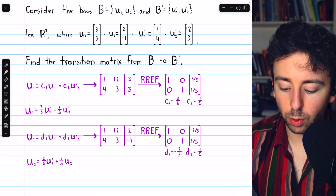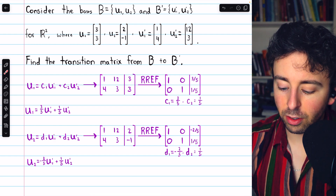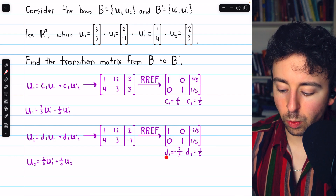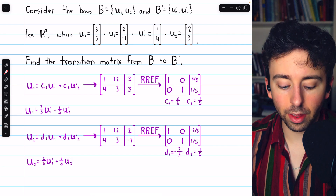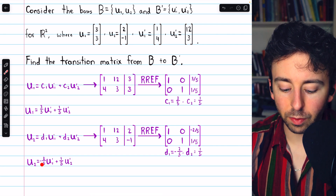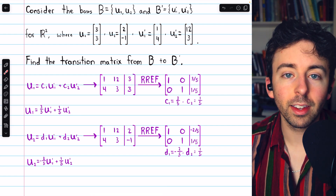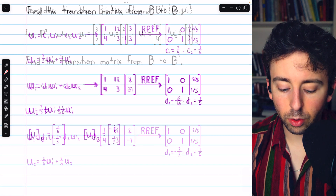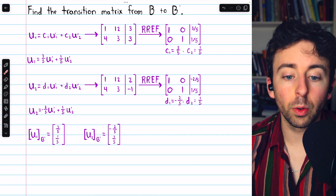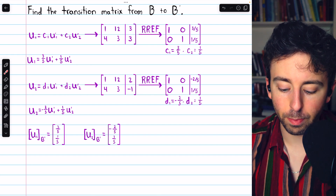We do the same thing for U2. Performing Gauss-Jordan elimination on this augmented matrix gets us to this reduced row echelon form. So D1 is negative two-fifths and D2 is positive one-fifth. So U2 equals negative two-fifths U1' plus one-fifth U2'. So negative two-fifths and one-fifth are the coordinates of this old basis vector relative to the new basis. Those are the transformed coordinate vectors — the old basis vectors relative to B'.